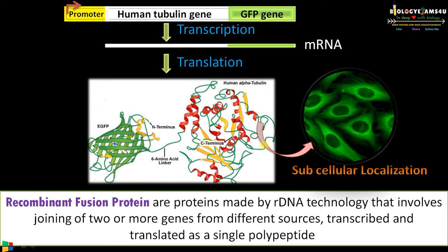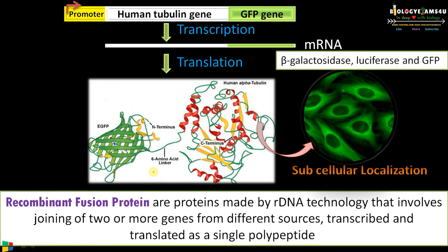This GFP is called a fusion partner. Common fusion partners include beta-galactosidase, luciferase, and green fluorescent protein. These are also called tag proteins or tagging proteins.